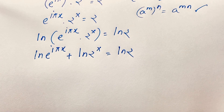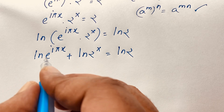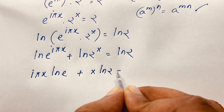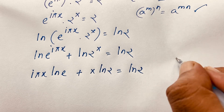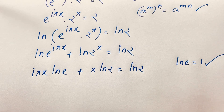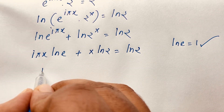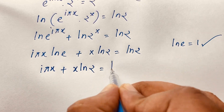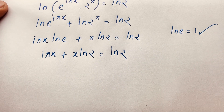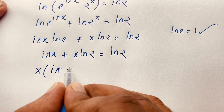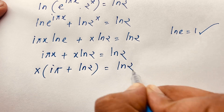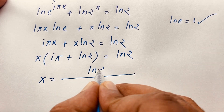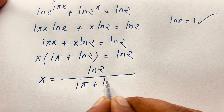Bringing the exponents forward using log rules: iπx · ln(e) + x · ln 2 = ln 2. Since ln(e) = 1, this simplifies to iπx + x·ln 2 = ln 2. Factoring out x: x(iπ + ln 2) = ln 2. Therefore x = ln2 / (iπ + ln 2). This is our final answer for Method 1.